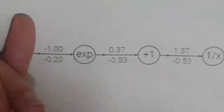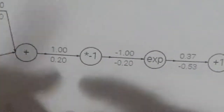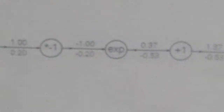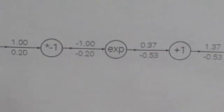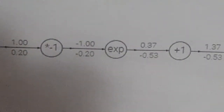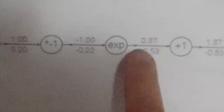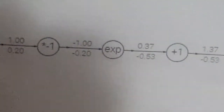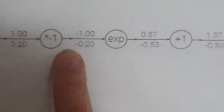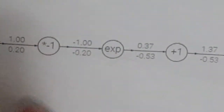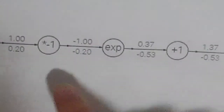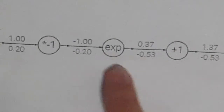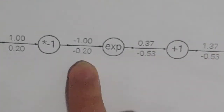Going back further, we have e^x. The derivative of e^x is e^x, so we plug in the value at this point in the graph, which is -1, into e^x, and then multiply by our previous derivative -0.53, and we get -2.